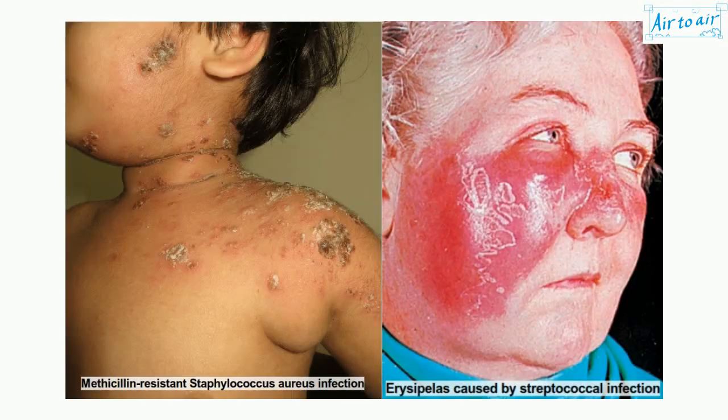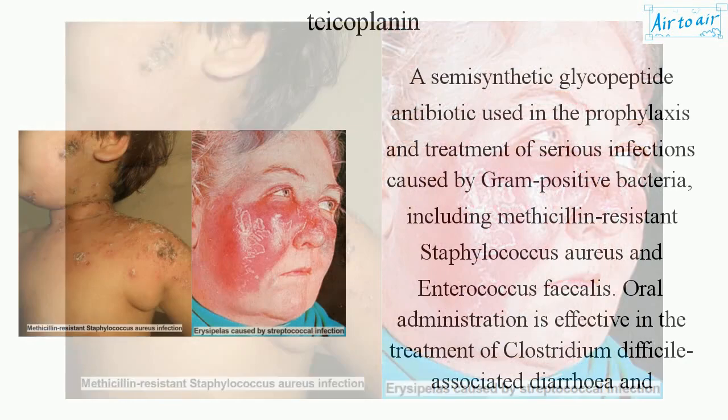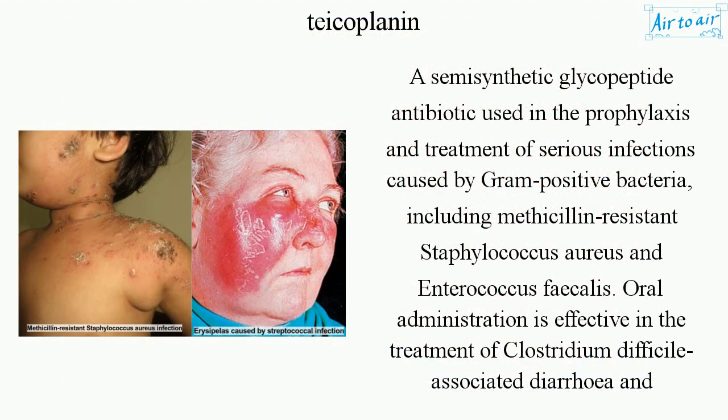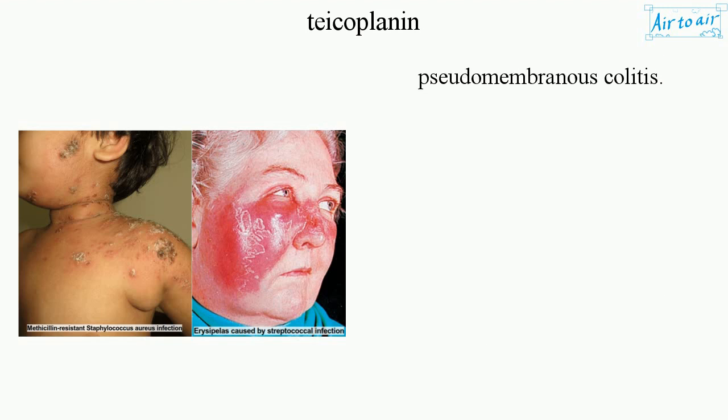Teicoplanin. A semisynthetic glycopeptide antibiotic used in the prophylaxis and treatment of serious infections caused by gram-positive bacteria, including methicillin-resistant Staphylococcus aureus and Enterococcus faecalis. Oral administration is effective in the treatment of Clostridium difficile-associated diarrhea and pseudomembranous colitis.